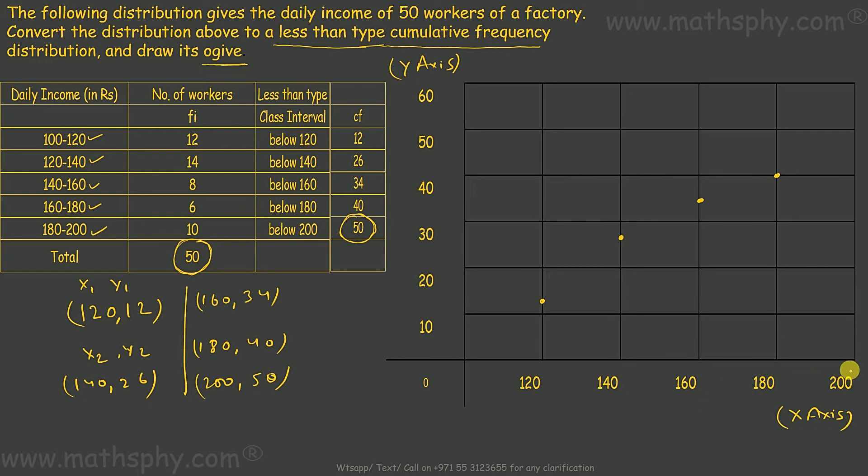And fifth is 250. It's 250. Let's connect them together. So, that's the ogive here. We call it less than type ogive. I'll write here. Less than type ogive. All right?